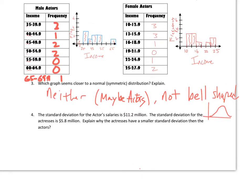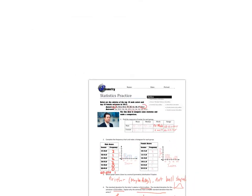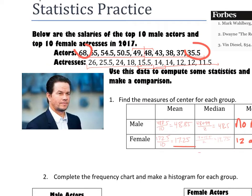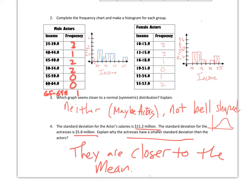The standard deviation for the actors is 11.2 and for the actresses is 5.8. A smaller standard deviation means they are closer to the mean. The female average is 17.25 and their values are all pretty close to it — only about 6 below or 9 above. The male average is 48.85 and the distance down to the lowest is about 13, so they're more spread out. Lower standard deviation means closer to the mean; higher means farther away.